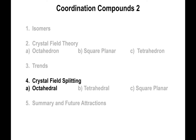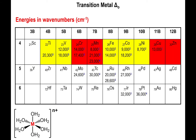We're going to investigate the delta octahedral values and the splitting diagram in correlation to an actual energy value associated with the complex. Since most transition metal ions can dissolve in water, we can create a table that shows the delta octahedral energy associated with making the hexa aqua complex for each one of these metal ions.